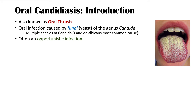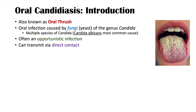Oftentimes Candida albicans is a commensal fungi — it's in our mouth, but it's not out of control because our immune system keeps it in check. However, the fungus can actually be transmitted via direct contact. So if an individual has overt oral thrush, they can transmit the fungi in larger quantities to someone else, for example through kissing.